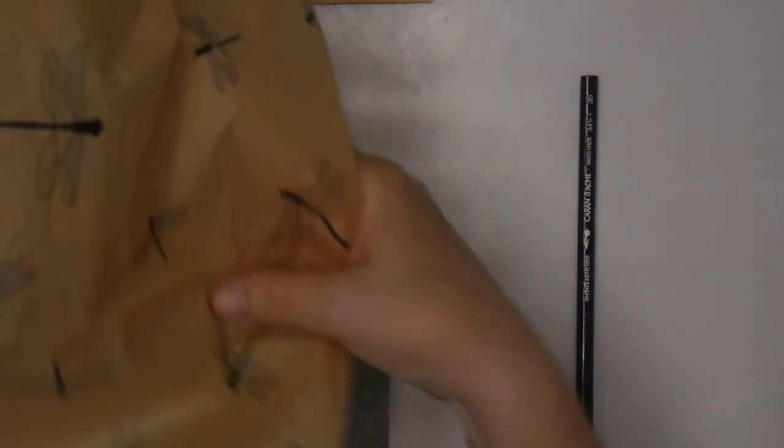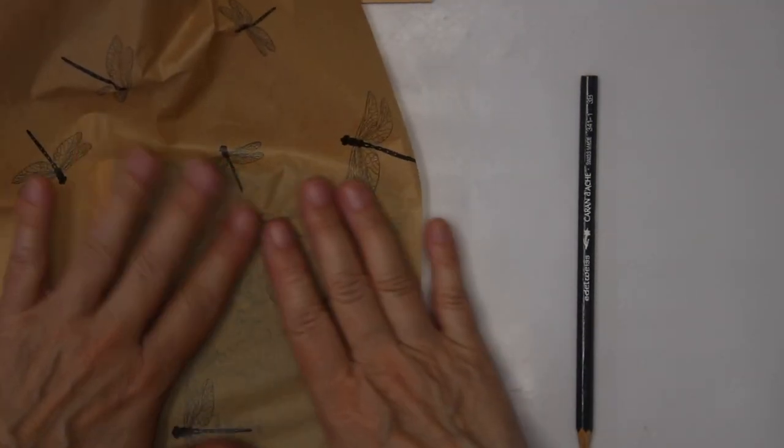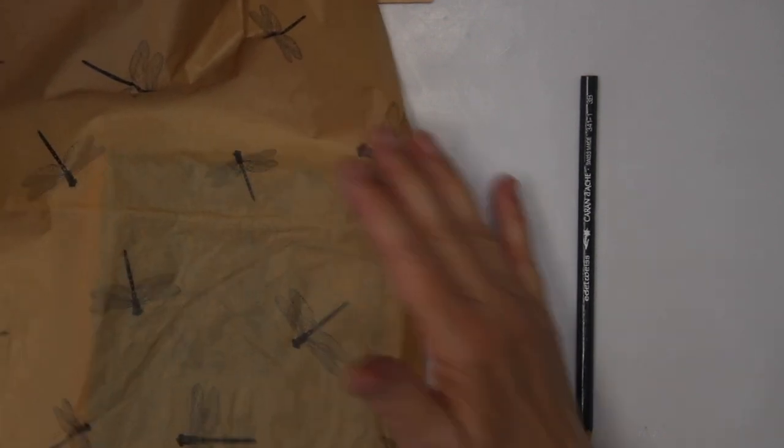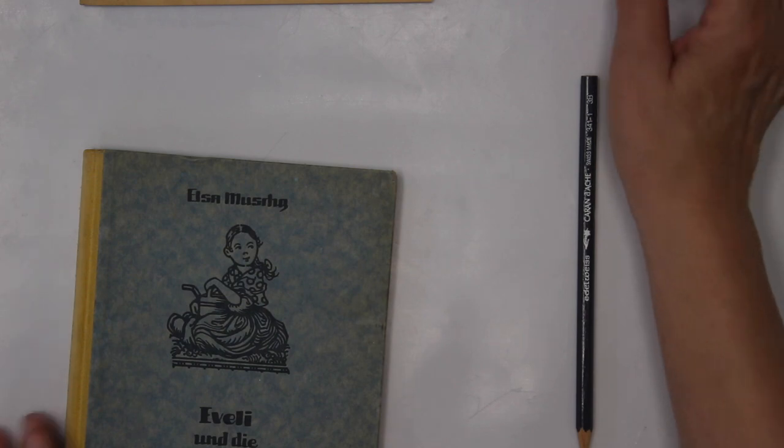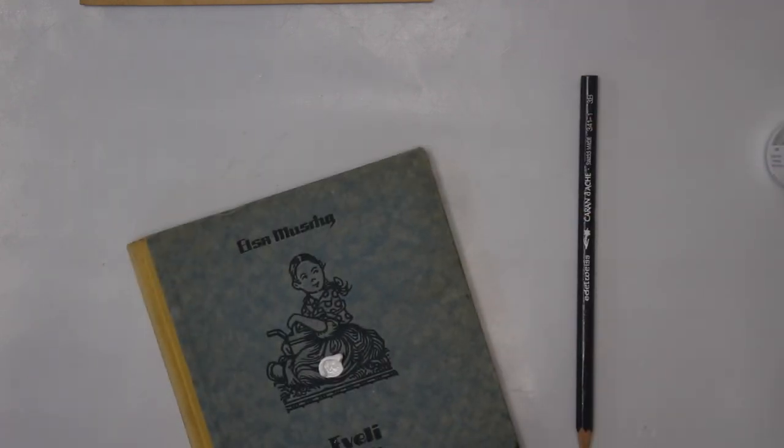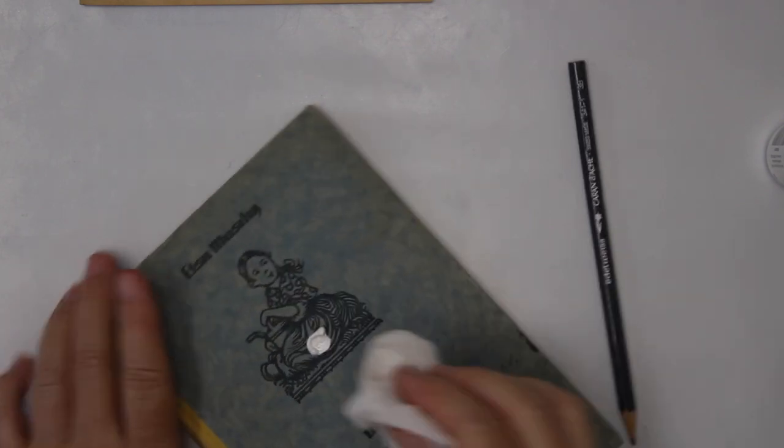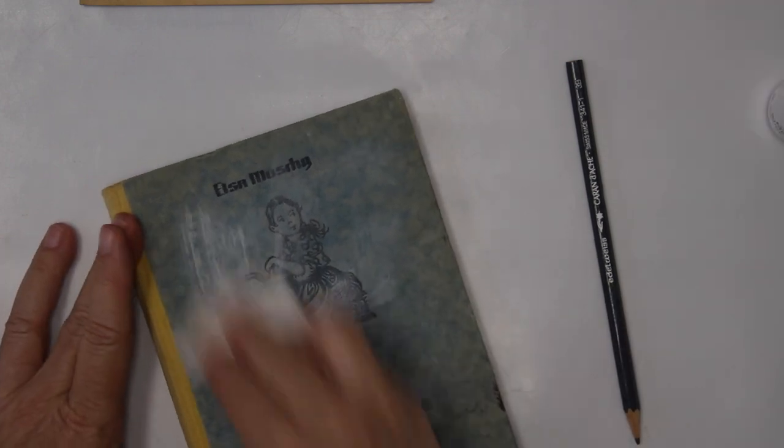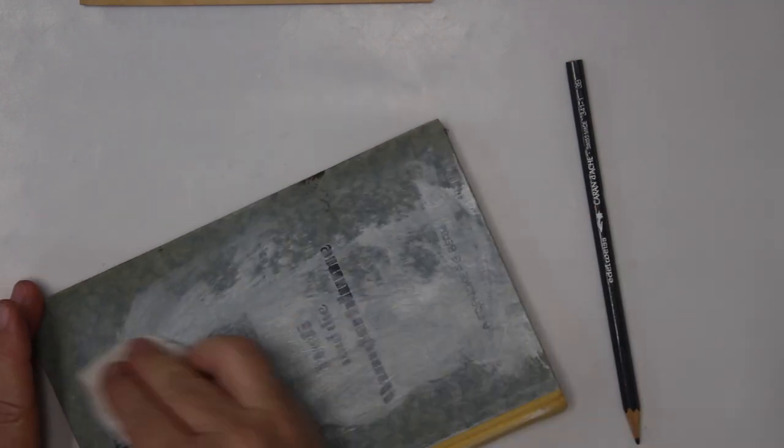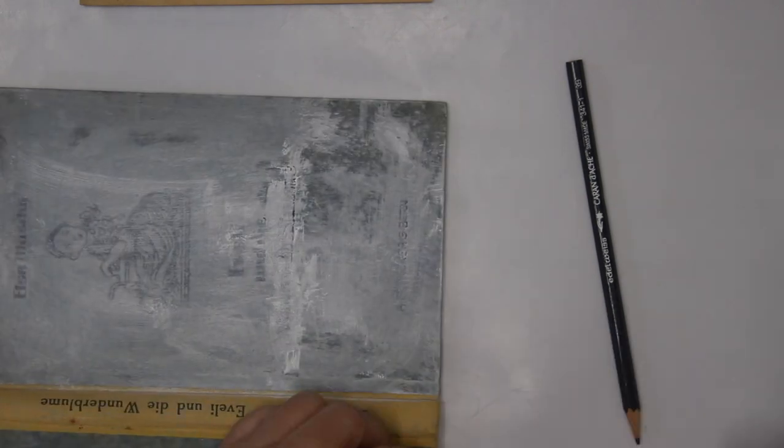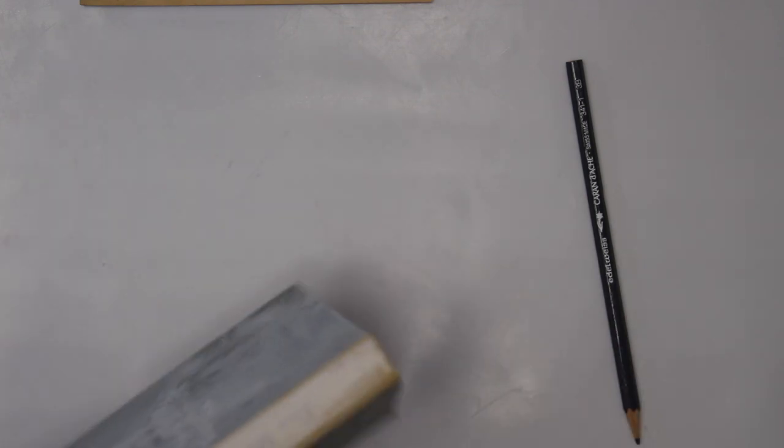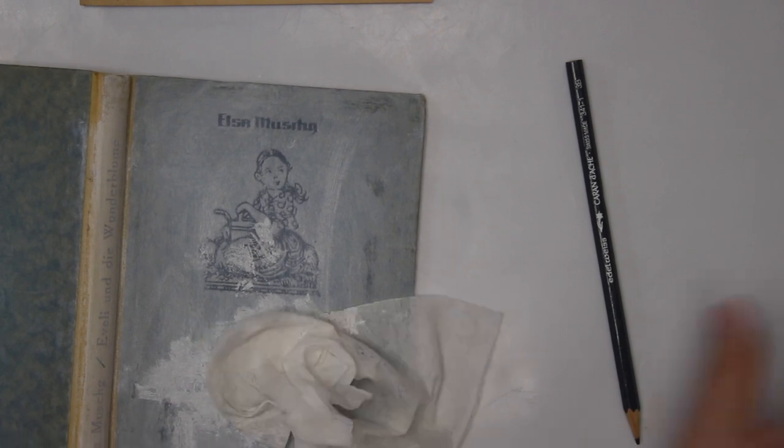I'm going to use this tissue paper. You can use any tissue paper. But I want to make sure that the text doesn't show too. So again, I'm going to add gesso. But this time I'm going to spread it with a wet wipe.